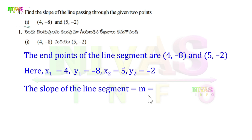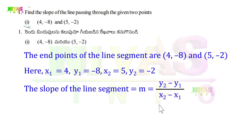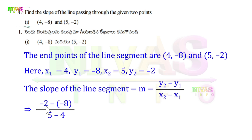The slope of the line segment M is equal to (y2 - y1) / (x2 - x1). Substituting the values: y2 = -2, y1 = -8, x2 = 5, x1 = 4. So M = (-2 - (-8)) / (5 - 4) = (-2 + 8) / 1 = 6 / 1 = 6. So the slope of the line is 6. This is the answer.